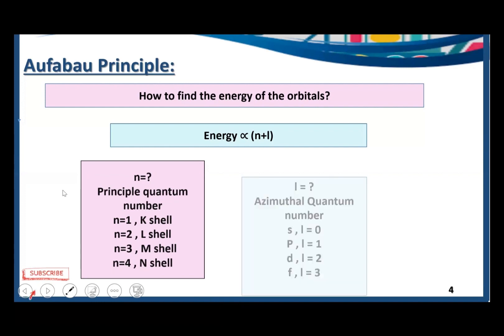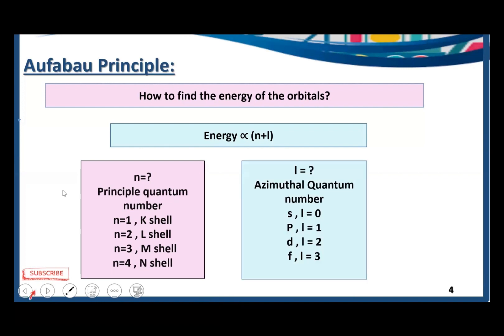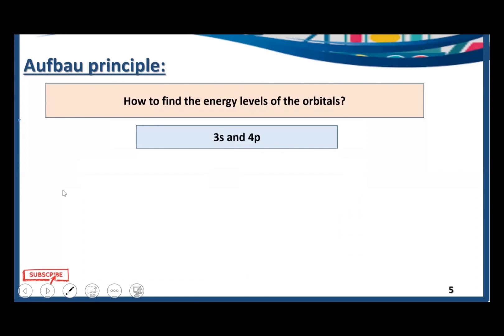The azimuthal quantum number l depends on the subshell: for s, l=0; for p, l=1; for d, l=2; and for f, l=3. Now we have two orbitals, 3s and 4p, and we need to decide in which orbital to accommodate the electrons first. We find the n plus l value for each orbital.